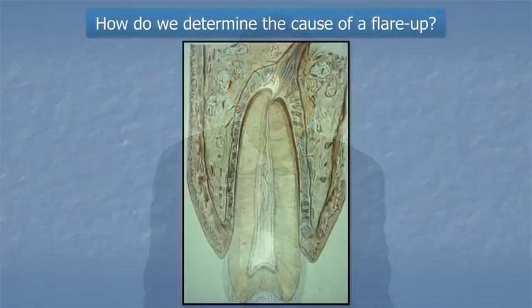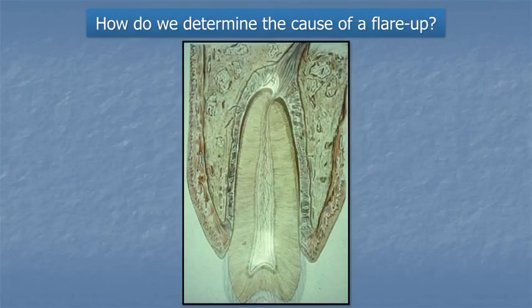We call that condition pericementitis. It is extraordinarily painful, and if the patient has that situation, unless we do something to relieve the occlusion, it is unlikely that the patient will have relief. From this model we can also look at the thickness of bone overlying both surfaces of the tooth. As we palpate that area and the finger slides up from the gingival third to the apical third, pain in endodontics generally causes pain in the apical third during palpation.